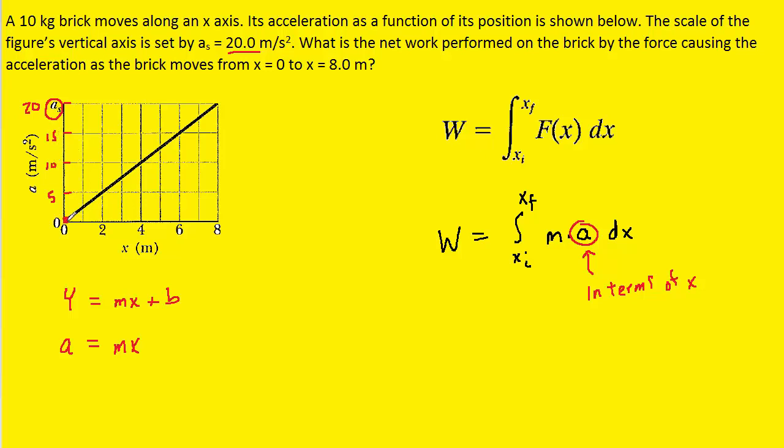Now, to get the slope, we can start at this point, and we can count up 5, 10, and then go over 1, 2, 3, 4. So the slope is up 10 over 4. And if we simplify that, we get 2.5. So let's come over here to our acceleration equation and plug in 2.5 for the slope.